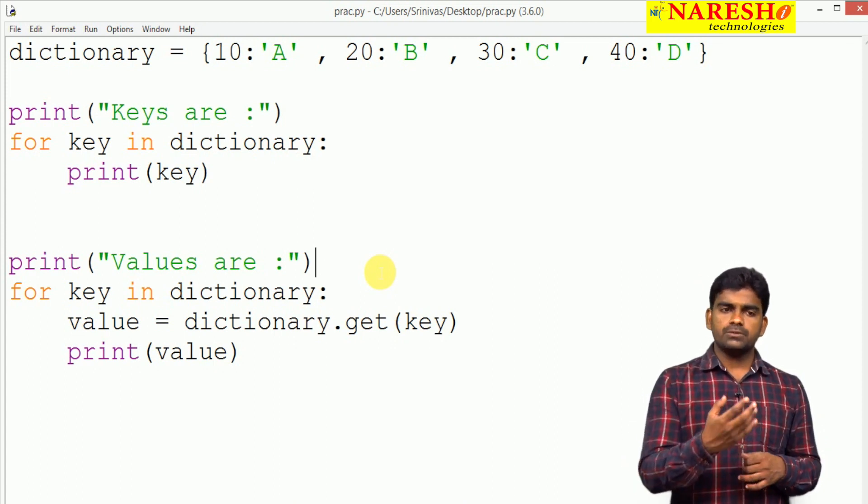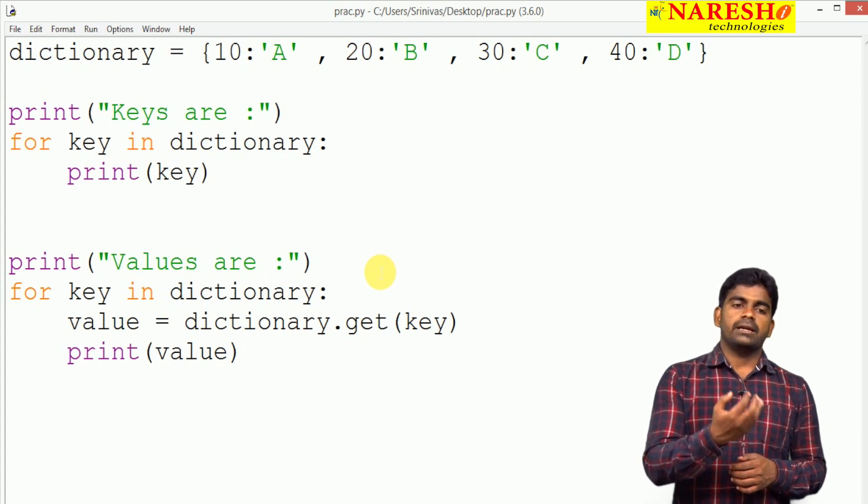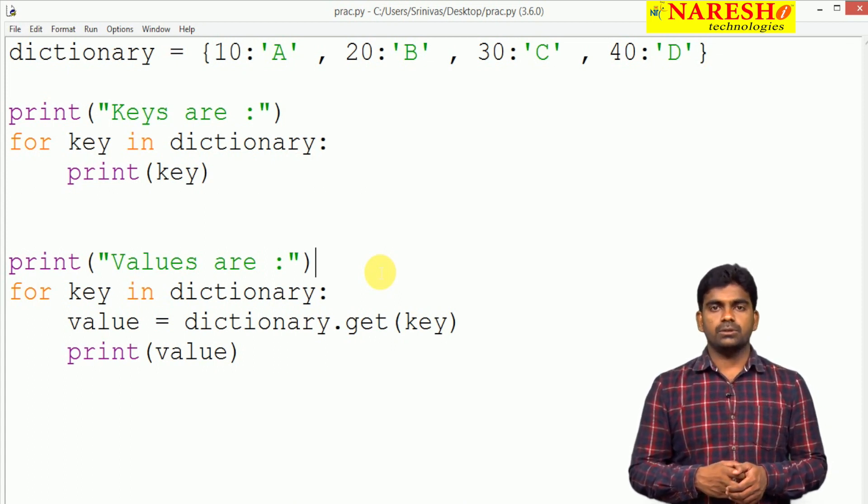We can use a for loop to process elements. We can store keys into the list, okay.